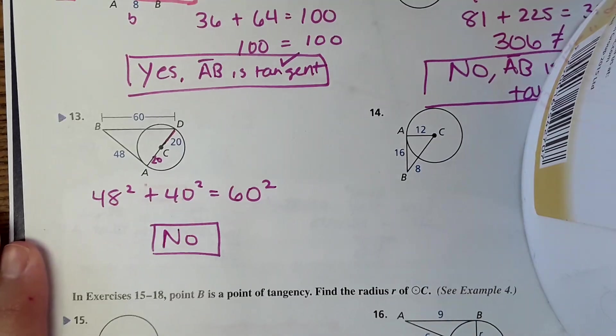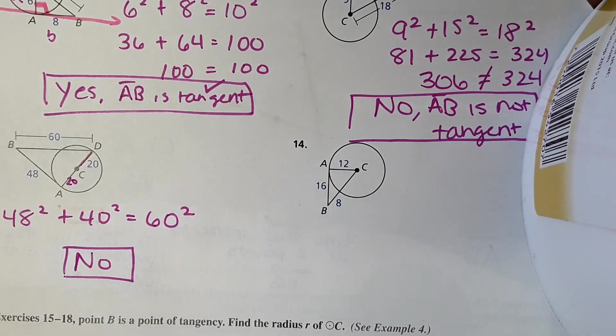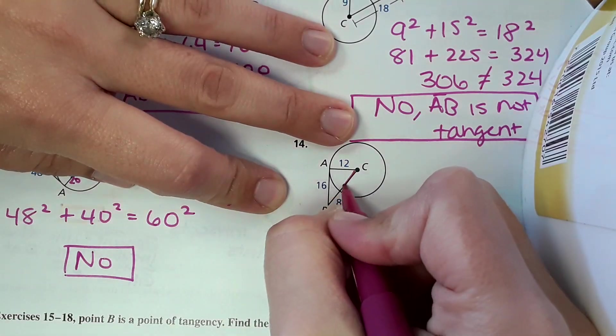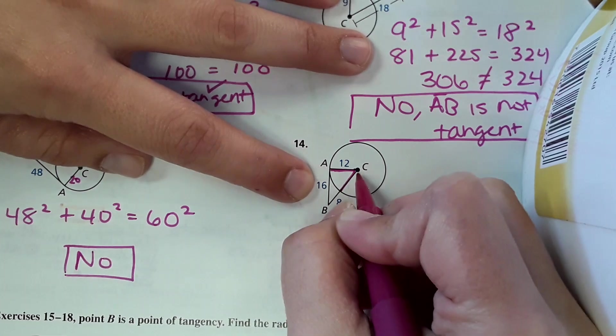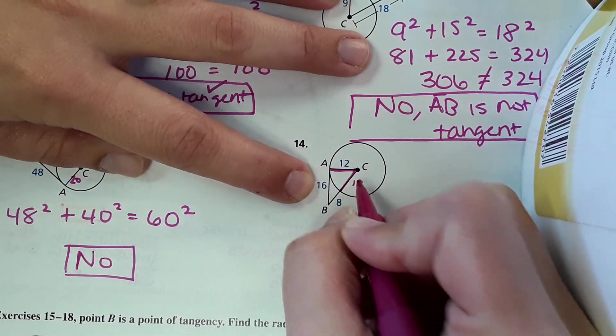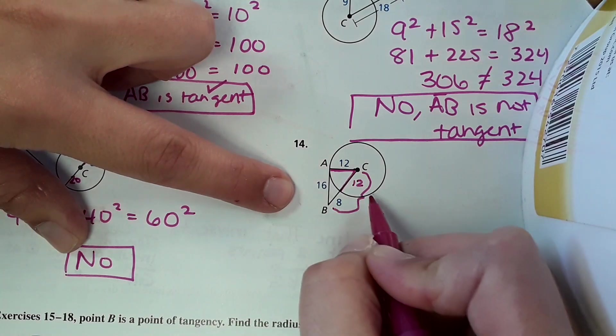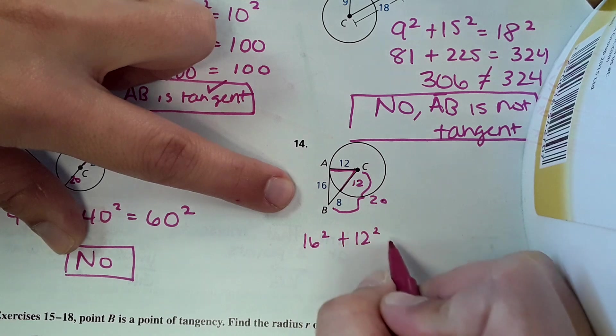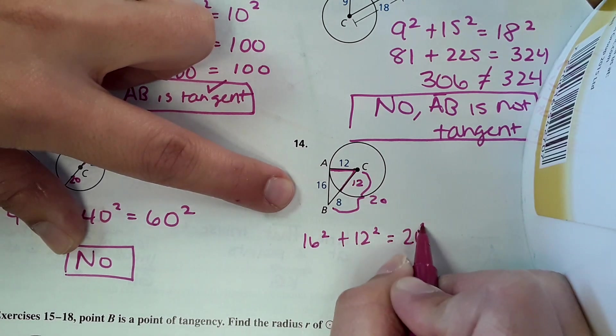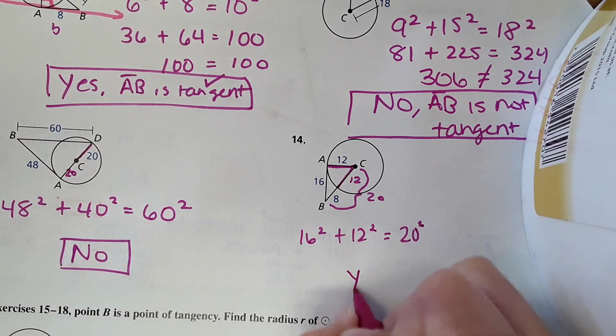And then number 14, same kind of idea. The only thing is they leave a segment that's not labeled. But they show that this radius is 12, so therefore this segment right here would be 12. And then that whole segment would be 8 plus 12, which is 20. So 16 squared plus 12 squared, you would test and see if that equals 20 squared. And this one actually does equal, so it would be yes.